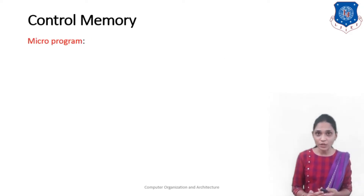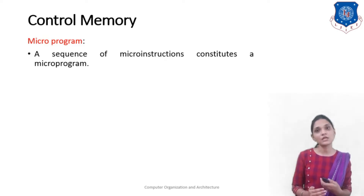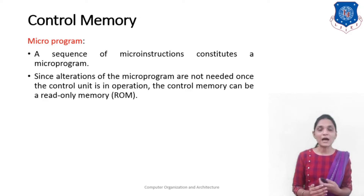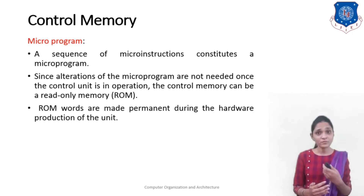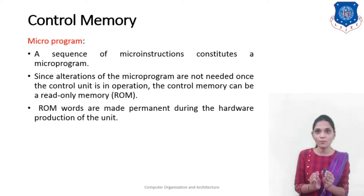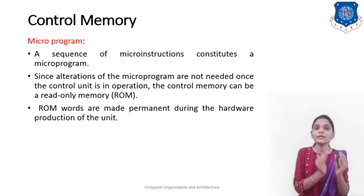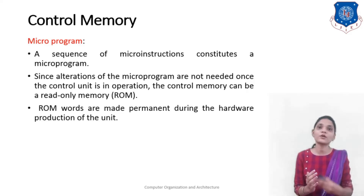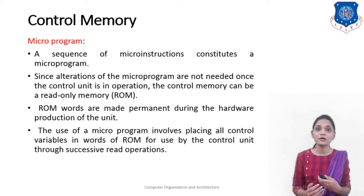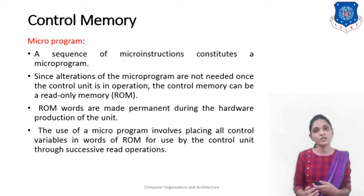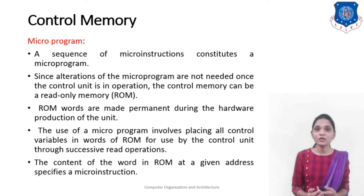Next, we will see the micro-program. A sequence of micro-instructions constitutes a micro-program. Since alterations of the micro-program are not needed once the control unit is in operation, the control memory can be known as read-only memory, or ROM. The ROM words are made permanent during the hardware production of the unit. This ROM or micro-program memory is fixed for your particular instruction set. If you change your instruction set, your micro-program is going to be changed. The use of micro-program involves placing all the control variables in a word of ROM for use by the control unit through successive read operations. The content of the word in the ROM at a given address specifies the micro-instruction.